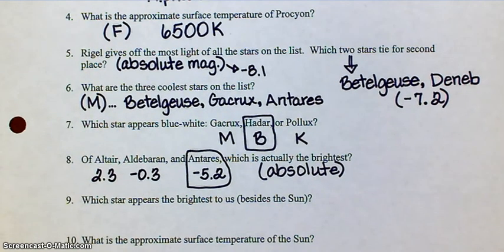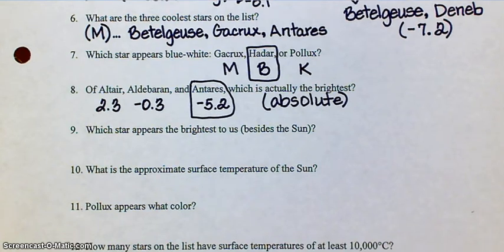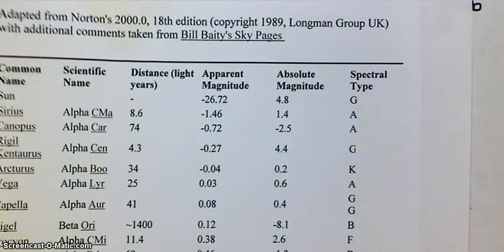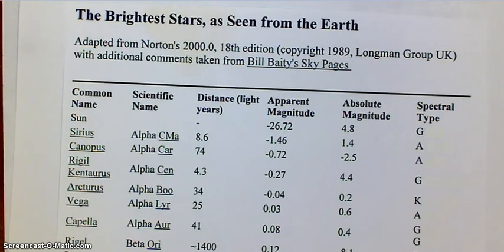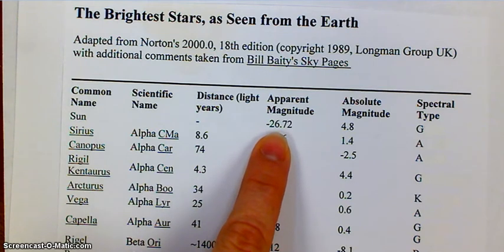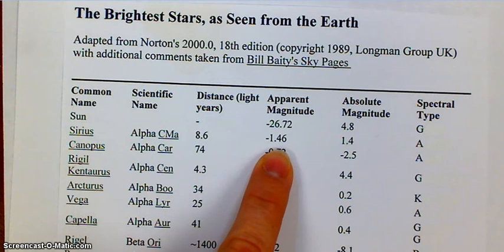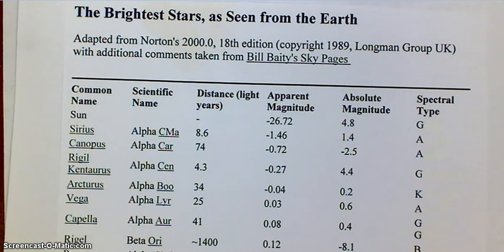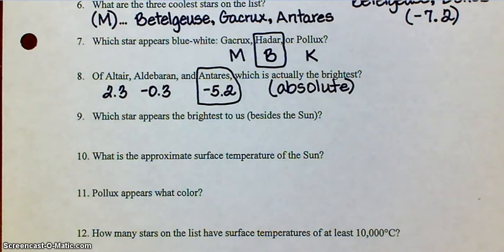Number nine asks: which star appears the brightest to us besides the sun? If you look really carefully at the list, you might have noticed that the list is sorted by apparent magnitude. The sun's apparent magnitude is way, way bigger than any of the other stars, so it's at the top of the list — obviously it's going to appear brightest to us. But what star is next on the list? That is Sirius. And almost as bright as Sirius is Canopus, and then down the list the dimmest star on the list is Shula at the bottom. The question was asking which star appears the brightest to us, and that's going to be Sirius at negative 1.46.